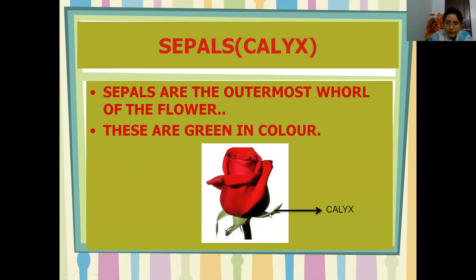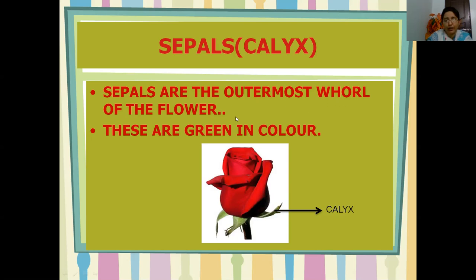These green color structures are called sepals. The collection of all sepals together is called calyx. A single unit is a sepal, but all together combinedly it is called calyx. Sepals are the outermost whorl of the flower. They are green in color and are arranged in a circle. Collectively, the sepals are called calyx. We will discuss their function later.